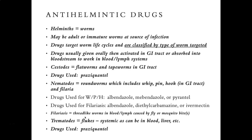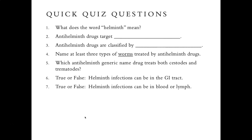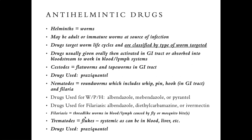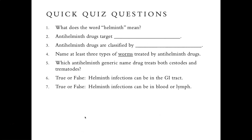Quiz questions: what does the word helminth mean? Antihelminthic drugs target what, and are classified by what? Be able to name at least three specific types of worms treated by these drugs. Which antihelminthic generic drug treats both cestodes and trematodes? True or false: helminth infections can be in the GI tract. True or false: helminth infections can be in blood or lymph.